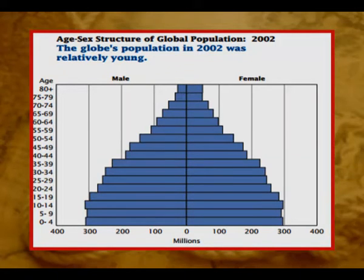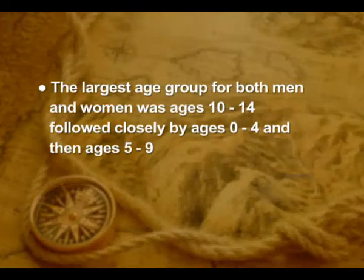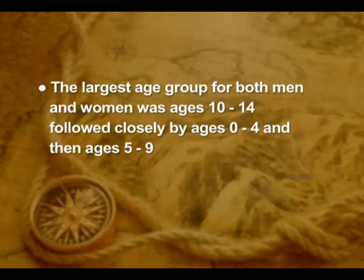The number of men and women on the globe are approximately equal. Men outnumbered women up through the 50 to 54 age group, after which women outnumbered men. The largest age group for both men and women was ages 10 to 14, followed closely by ages 0 to 4, and then ages 5 to 9. Each successively older age group, beginning with age 15 to 19, was progressively smaller.